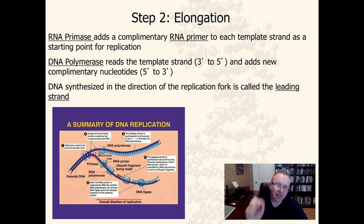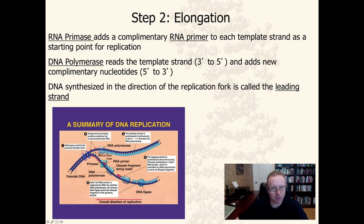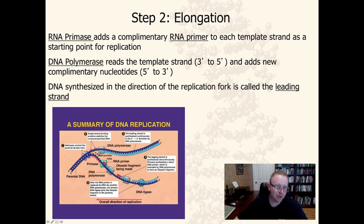DNA polymerase reads the 3' end of the template strand and adds new complementary nucleotides 5' to 3'. DNA that is synthesized in the direction of the replication fork is called the leading strand. On the summary diagram on page 66, the leading strand shows replication moving toward the replication fork. DNA polymerase reads the 3' end of the template and adds new DNA 5' to 3', continuously in that same direction.